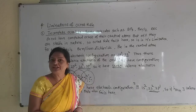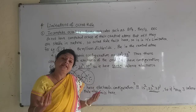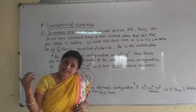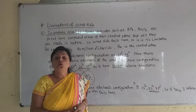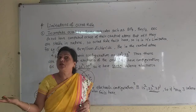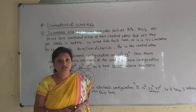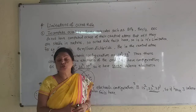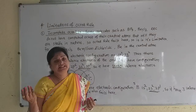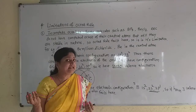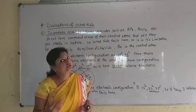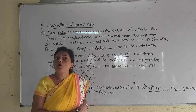So it is the limitation or drawback or error of the octet rule. But again, in nature, there are such molecules whose central atom has more than 8 electrons in the valence shell. But still those molecules are also stable in nature. As the central atom does not have only 8 electrons as that of the inert gases, they have extra electrons in the valence shell. So this is also the limitation of the octet rule.